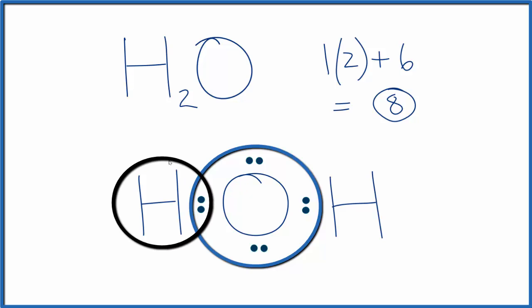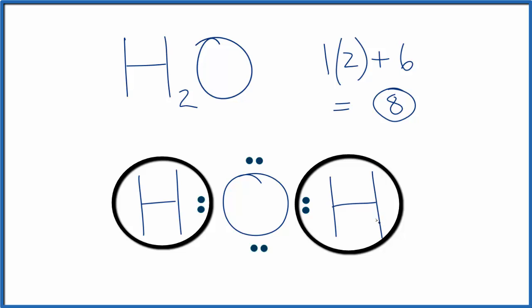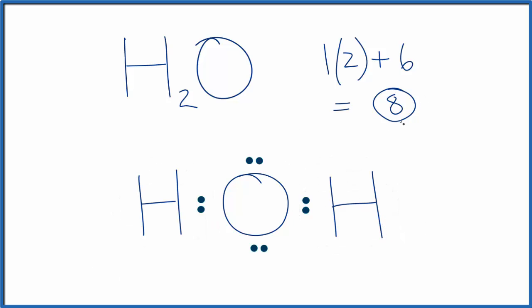The hydrogen, each hydrogen has two, but that's all hydrogen needs. So this is the Lewis structure for H2O, water, because we have those eight valence electrons for the water molecule.